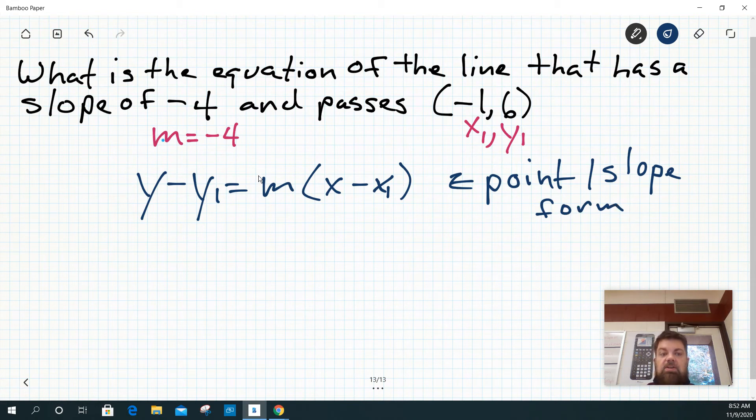So what I'm going to do is wherever, so I've got y minus y1. Well, what's y1? 6. And then m is negative 4 times the quantity x minus x1. But what's x1? Minus 1.